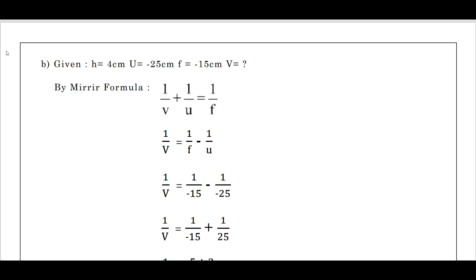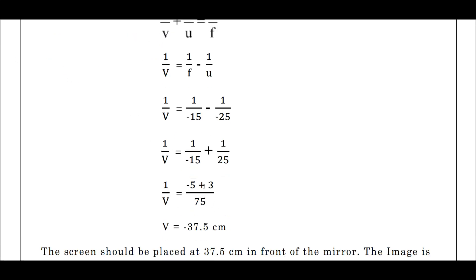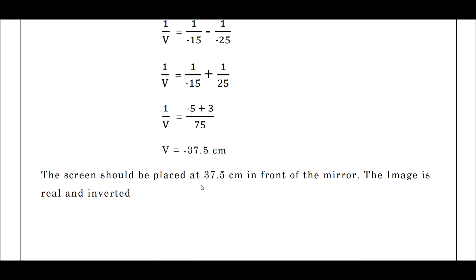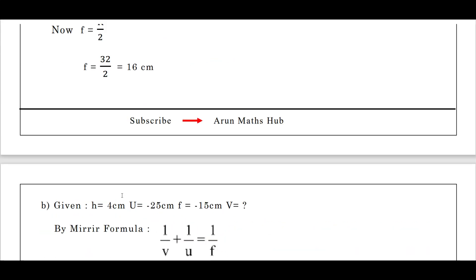1/(-25), minus into minus is plus. Now taking LCM, we get 1/v = (-5 + 3)/75. -5 + 3 is -2 divided by 75, we get 1/v = -2/75 = 1/(-37.5). Cross multiplying, we get the image distance v = -37.5. The screen should be placed at a distance of 37.5 centimeter in front of the mirror. The image here is real and inverted.